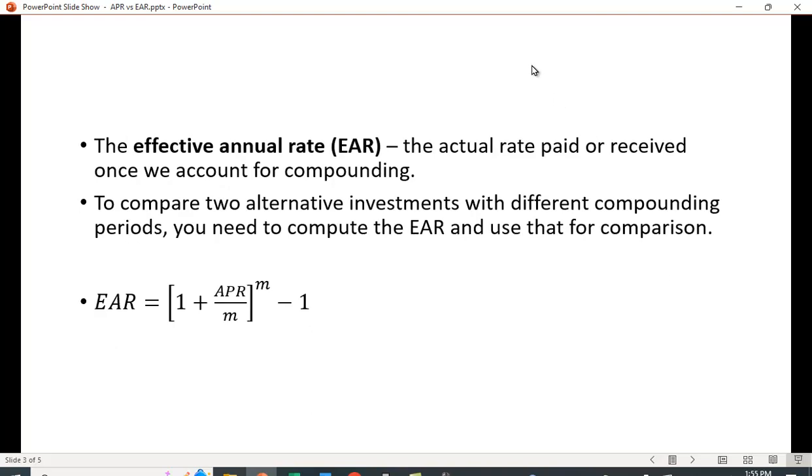The effective annual rate (EAR) is the actual rate paid or received once we account for compounding. If you go into a bank, many times you will see a poster in the lobby that will give the rates for certificates of deposit with a couple of different rates. It might say the APR is 5%, and then it'll tell you what the effective rate is based on the compounding. So the effective rate might be 5.2% based on whether it's daily or monthly or weekly compounding.